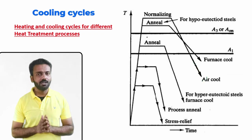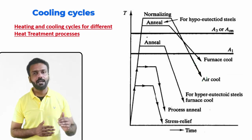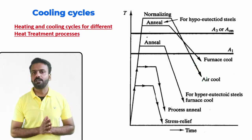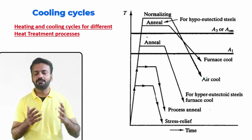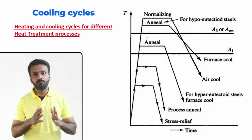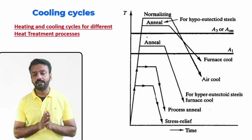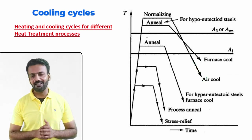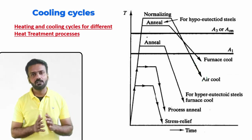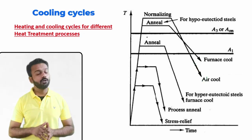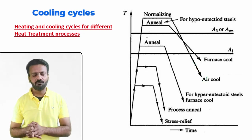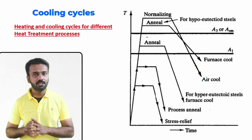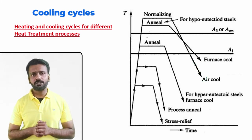This diagram shows the cooling cycles for different types of heat treatment, from annealing to normalizing. For normalizing, we heat above the Ac3 and Acm lines — the highest temperature used — for both hypo and hyper-eutectoid steels, then perform air cooling. For full annealing, hypo-eutectoid steel is heated above A3 while hyper-eutectoid steel is heated just above A1, followed by furnace cooling.